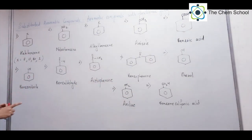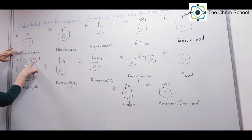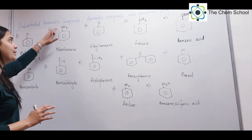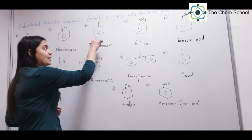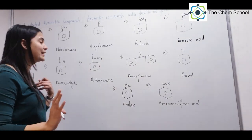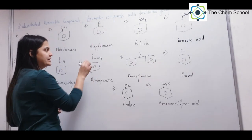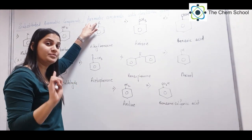If you have benzene with X (a halogen) attached, it is halobenzene. X can be F, Cl, Br, or I. If X is F → fluorobenzene; Cl → chlorobenzene; Br → bromobenzene; I → iodobenzene. That is your halobenzene when a halogen is attached. Next, if benzene has an NO2 substituent attached, you call it nitrobenzene. If an alkyl or aryl R group is attached to benzene, you call it alkylbenzene.